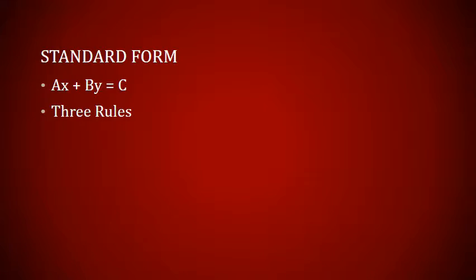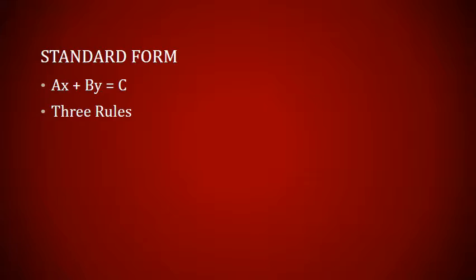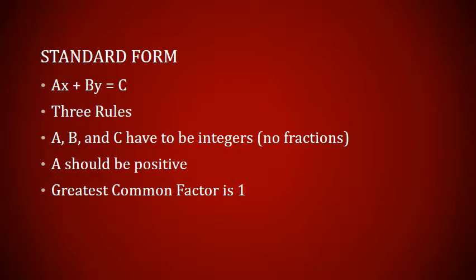There are three rules we have to follow to properly put something in standard form. One: A, B, and C all have to be integers — no fractions. Two: A, the lead coefficient, is to be a positive number. And three: the greatest common factor for A, B, and C is one.